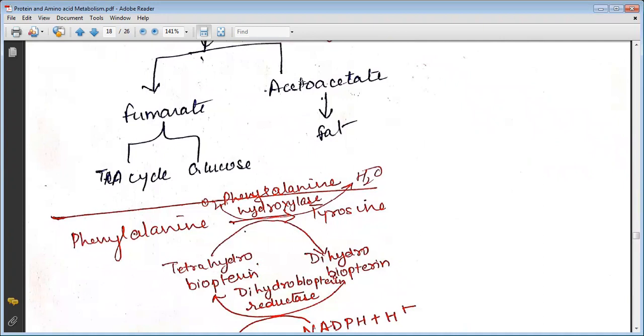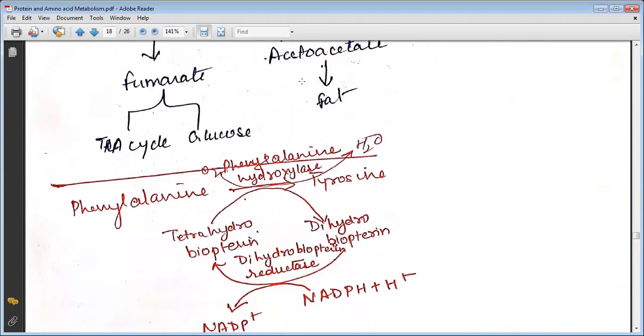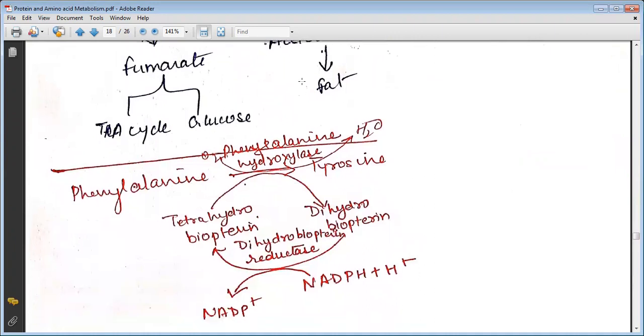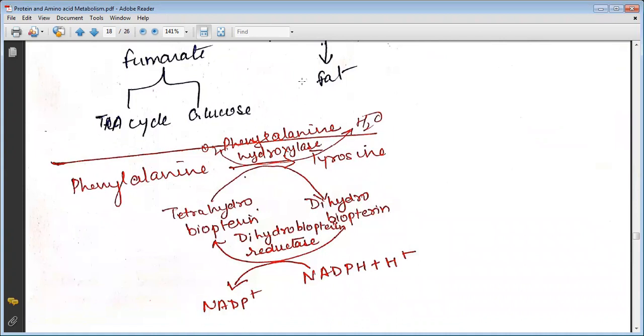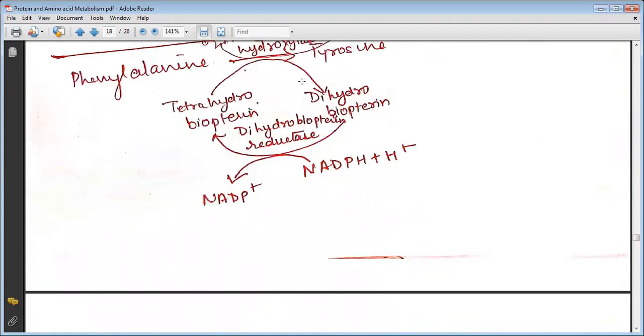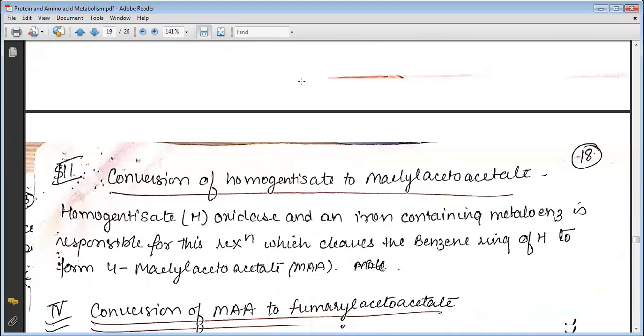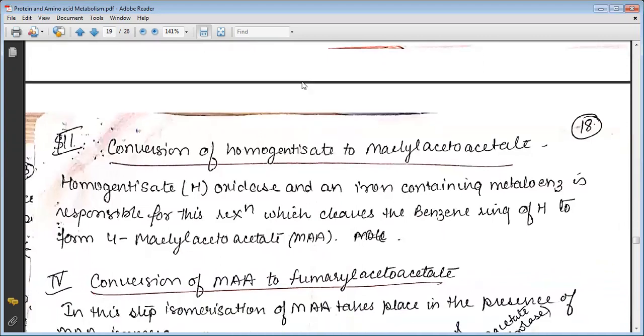In the phenylalanine hydroxylase reaction, phenylalanine changes to tyrosine with water. Tetrahydrobiopterin changes to dihydrobiopterin, and NADPH changes to NADP+. The conversion of homogentisate to maleylacetoacetate uses homogentisate oxidase, an iron-containing metalloenzyme responsible for the reaction which cleaves the benzene ring of homogentisate to form maleylacetoacetate.